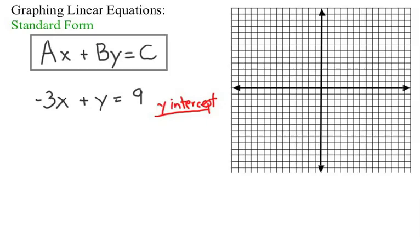Alright, the y intercept is where x is zero. So, we are going to cover up or ignore the x term, which is negative 3x. That gives us the equation of y equals 9. So, the y intercept is at positive 9. On the y axis, you count up 9. 1, 2, 3, 4, 5, 6, 7, 8, 9. And, you know, your line is going to be going through that point.